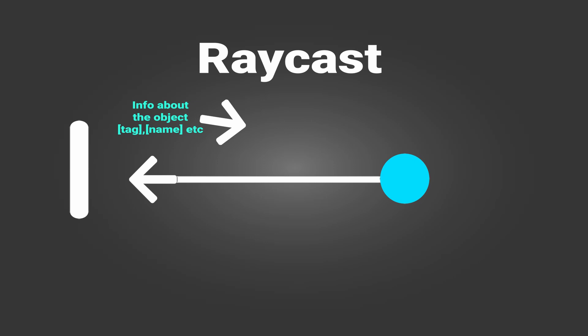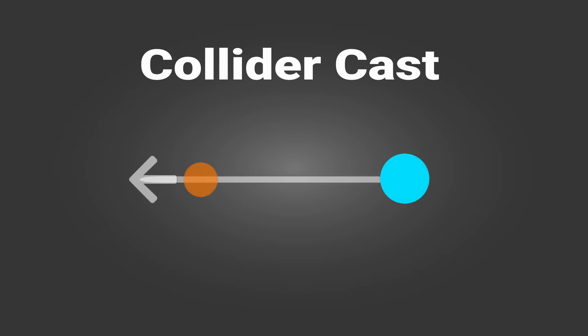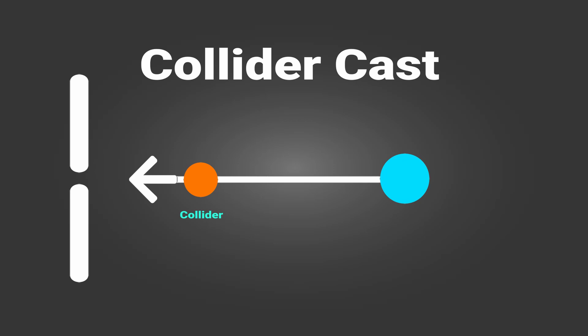In game engines, we have something called raycasting. Raycasting is very simple: you have a start point, you cast a line in a specific direction, and when the line hits something, you get information about what it hit — like what the tag is, whether it's the ground, an enemy, or a wall. You might also get the surface normal or rotation. Another method is collider casting, which in some situations is more helpful than raycasting because you have volume instead of just a line. Casting a volume lets you check multiple colliders, multiple surfaces, or detect gaps — for example, a sphere collider cast can prevent the player from going through small gaps in the ground.